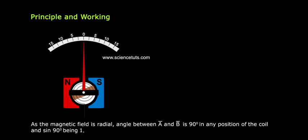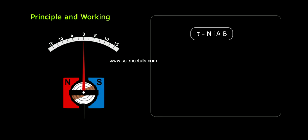As the magnetic field is radial, angle between A bar and B bar is 90 degrees in any position of the coil, and sin 90 degrees being 1, tau equals NIAB.